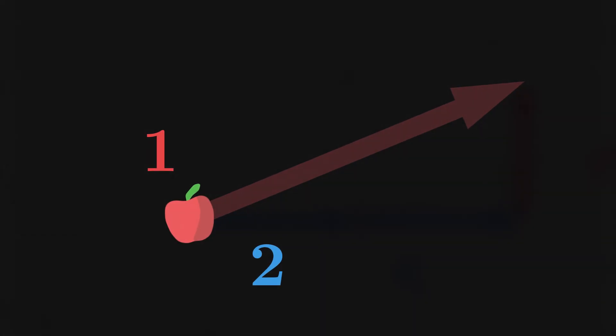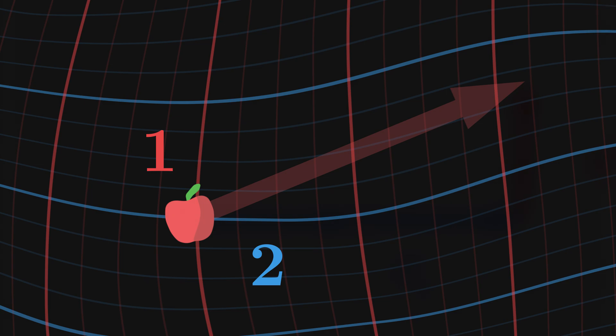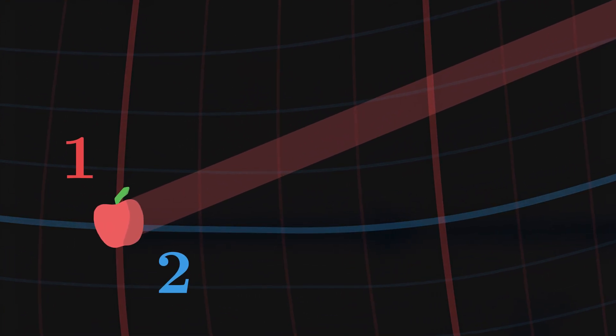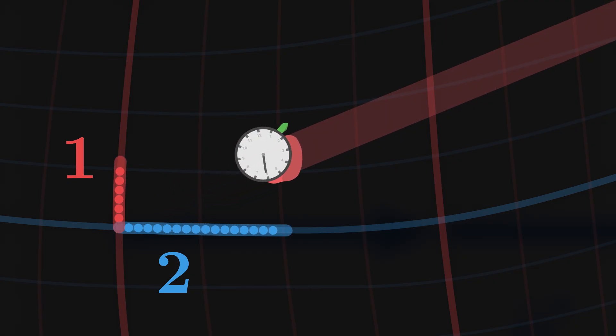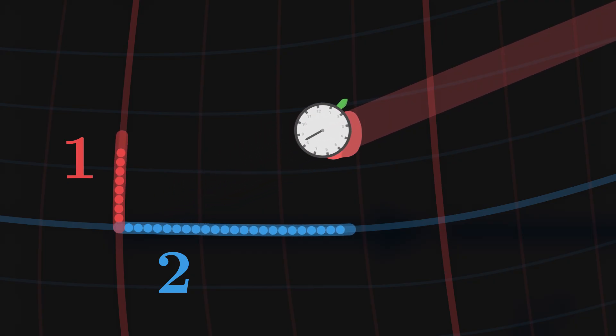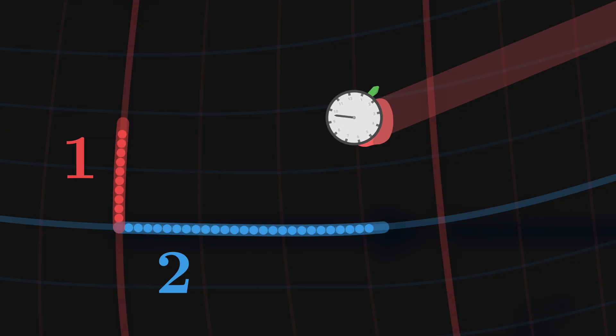The value of a component indicates the rate at which the corresponding coordinate increases. In a way, we measure the rate at which the apple moves along each of the two coordinates as proper time goes by. More generally, we can write the velocity vector as the sum of its components multiplied by the basis vectors.